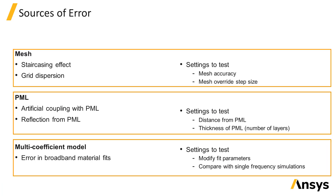Since the FDTD method solves Maxwell's equations with no approximations, the main sources of error from FDTD simulations come from the numerical error due to the discretization of space and time, use of artificial PML absorbing boundaries, and error in the broadband material fits.